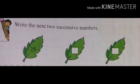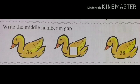Write the next two successive numbers. Number 25 is given — what will be the next number? Number 26. After number 26, the next number is 27. Write the middle number in the gap: numbers 36 and 38 are given — what will be the middle number? Number 37.